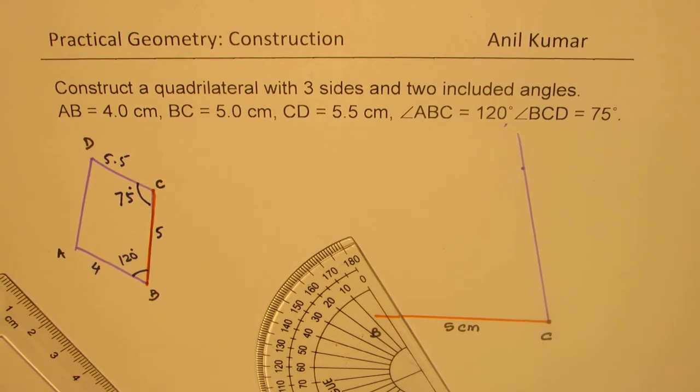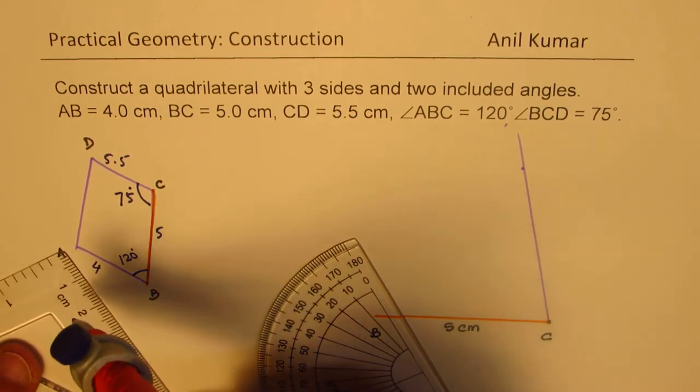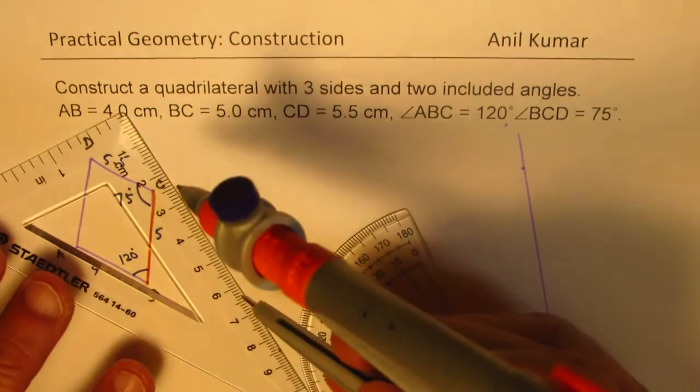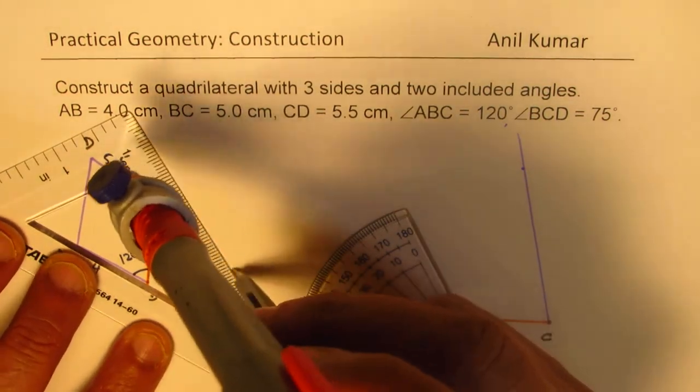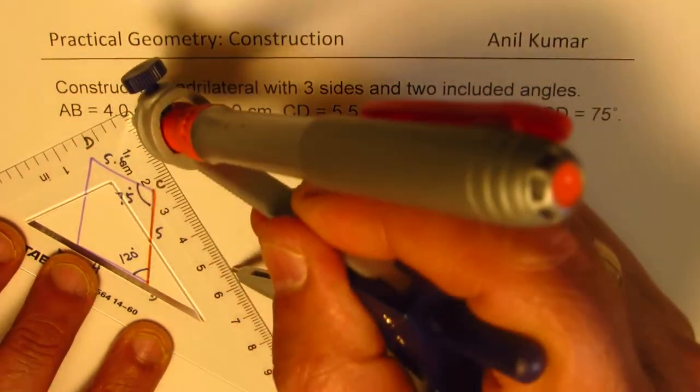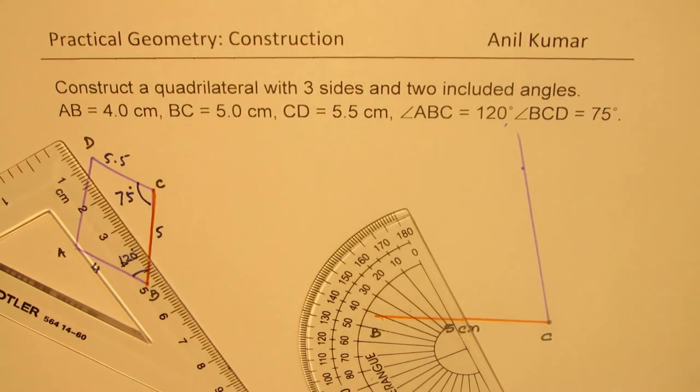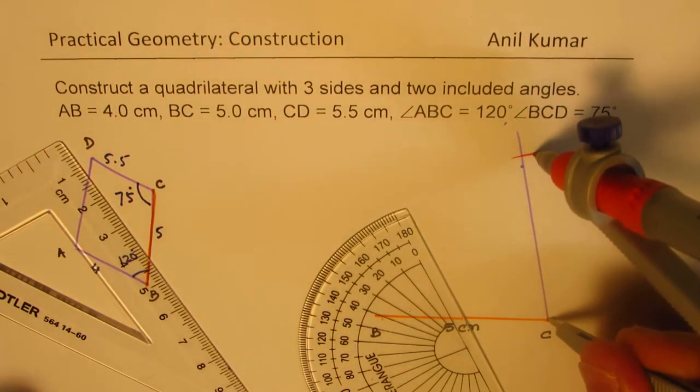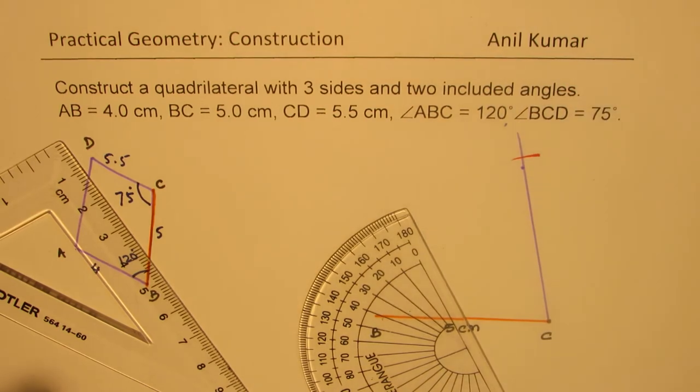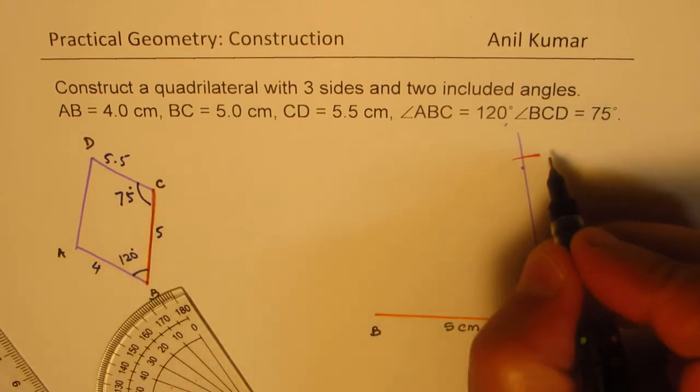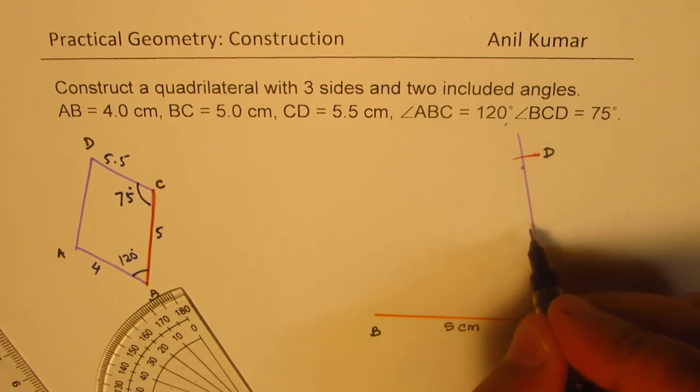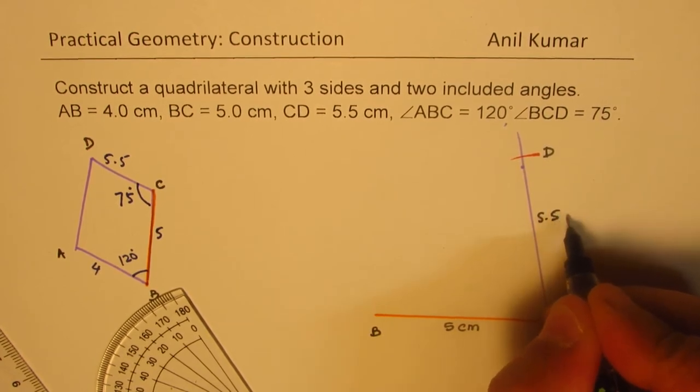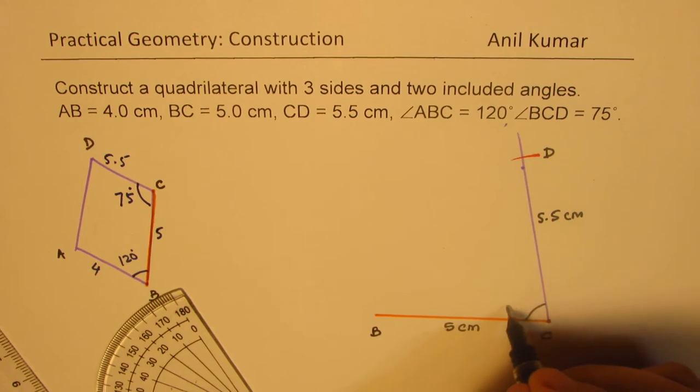Now we have to take 5.5 units on this. So C to D is 5.5 units. You can open the compass to 5.5 units. That is 5.5 from C and that gives you D. So we get our point D, which is 5.5 centimeters at an angle of 75 degrees.